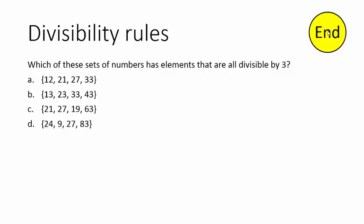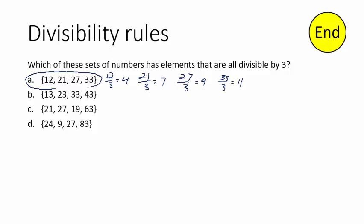Alright, which of these sets of numbers has elements that are all divisible by 3? What is that really saying? Here's a set of numbers — if all four of them you can divide by 3 and get a whole number, then you have found that set. Let's take a look at Choice A: 12 divided by 3 gives me 4, 21 divided by 3 gives me 7, 27 divided by 3 gives me 9, 33 divided by 3 gives me 11. If I systematically go through A, B, C, D and A gives me a correct answer, I'm just going to stick with it and move on.